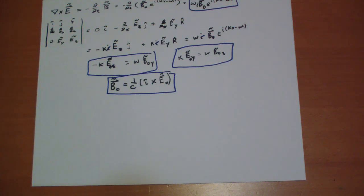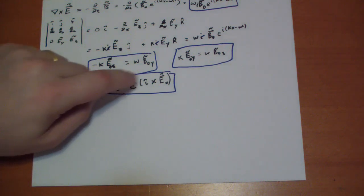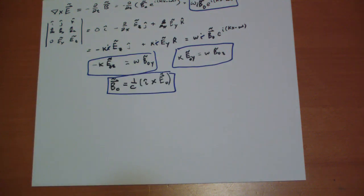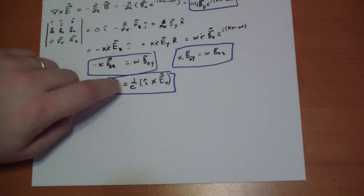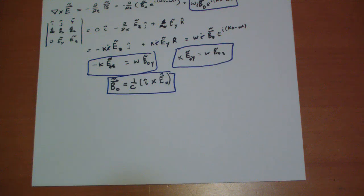This basically says that the B-field is E to the i kappa X minus omega T times this factor, and the E-field is E to the i KX minus omega T times this thing, and those two things are directly related to each other in this way. It especially says that these two constants are in the same phase. When B is at its maximum, E is at its maximum. So there's no delta difference between the E and the B-fields.